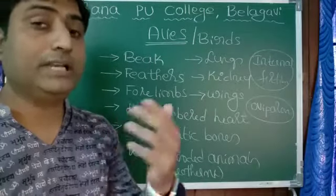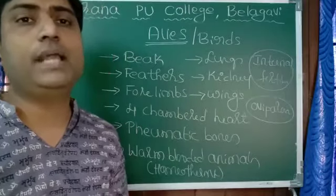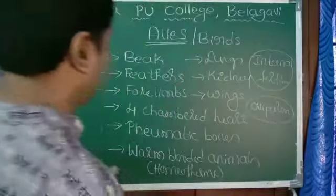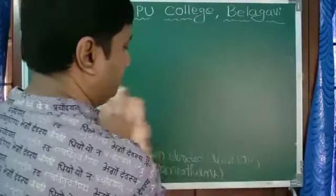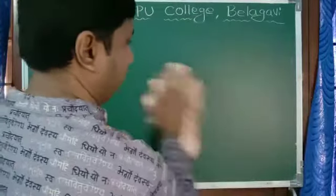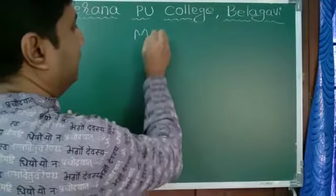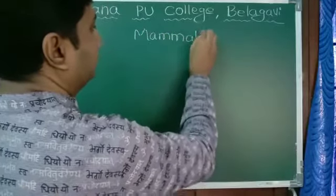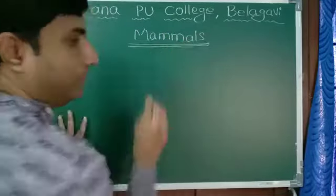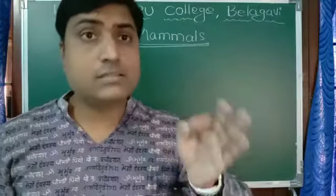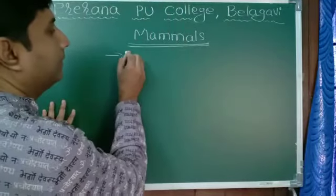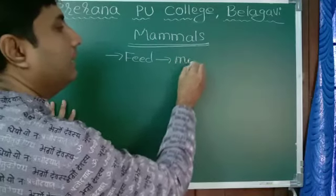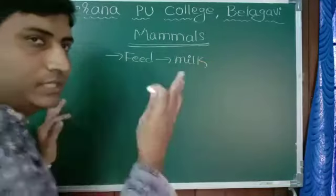Now we move on to the next and most developed member of the animal kingdom, and that is Mammalia — ourselves. The best definition for mammals: mammals are animals with mammary glands. Mammary gland means they feed their young ones with milk, and such animals are called mammals.